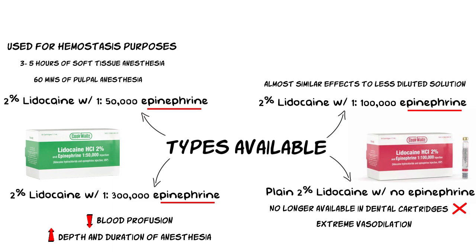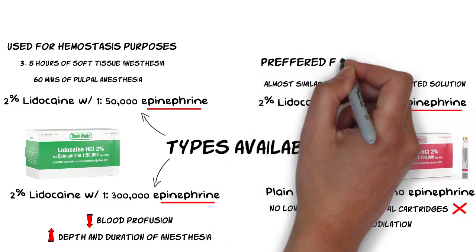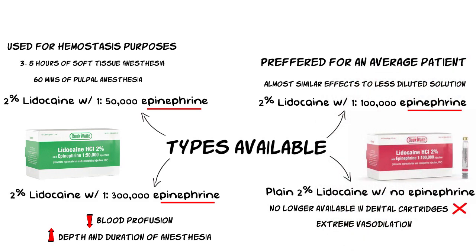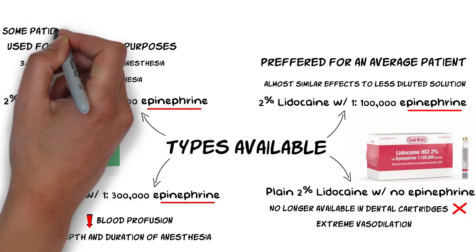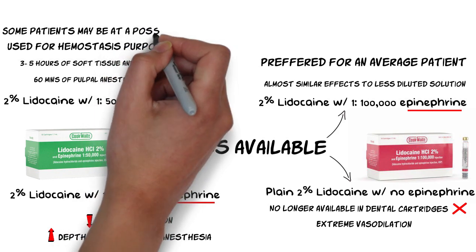In fact, the duration and depth of pulpal anesthesia attained with both formulations is almost equivalent. Hence, in terms of a typical patient, the formulation with 1 part per 100,000 parts of epinephrine is preferred, as the concentration of epinephrine in that solution is almost half. Although the dose of 1 part per 50,000 is not too dangerous for the majority of patients, ASA-3 and ASA-4 patients with a history of cardiovascular disease may prove to be overly sensitive to these concentrations. The same can be said for elderly patients as well.